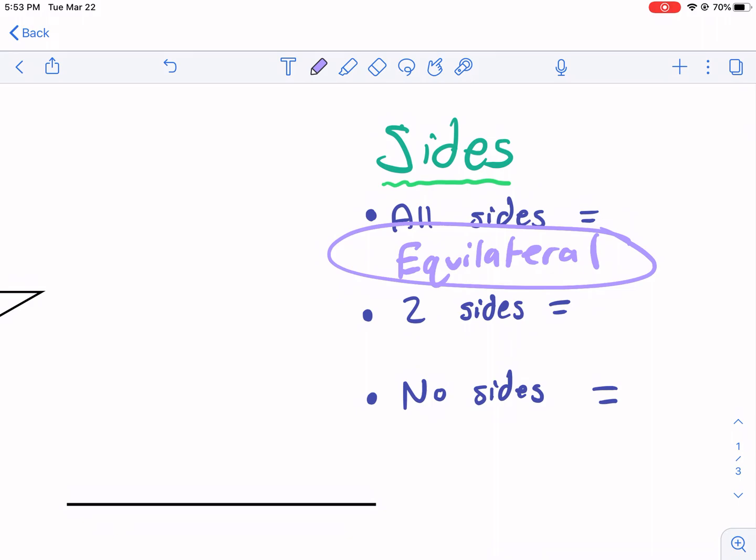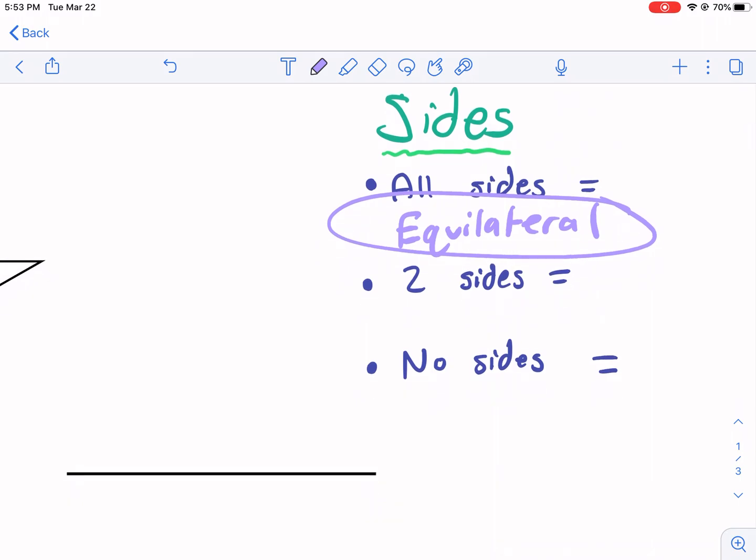Two sides, we're talking about an isosceles. And then the spelling is weird, but I'm pretty sure it's I-S-O-S-C-E-L-E-S. I'm almost positive that's what it is. Leave a comment if it's wrong.